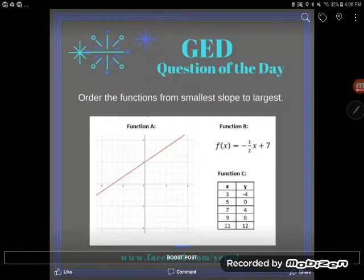We've gotten to the most complex of the types of slope problems that I've seen in the GED world. This is about as tricky as it's going to get. Take a look at what it says here. It says order the functions from smallest slope to largest, so we are clearly being asked to compare slope.